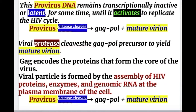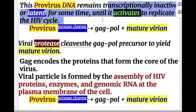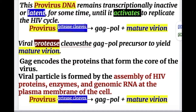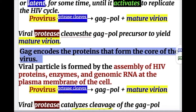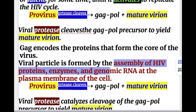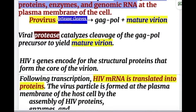This provirus DNA remains transcriptionally inactive or latent for some time until it activates to replicate the HIV cycle. The enzyme protease cleaves the gag-pol precursor to yield mature virion. Gag encodes the protein that forms the core of the virus. The viral particle is formed by assembly of HIV protein, enzymes, and genomic RNA at the plasma membrane.